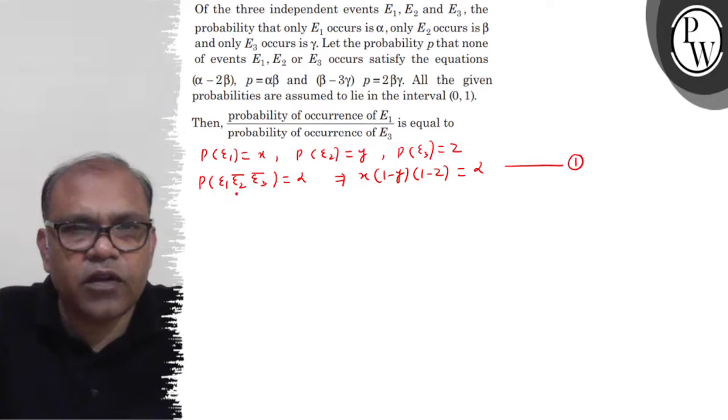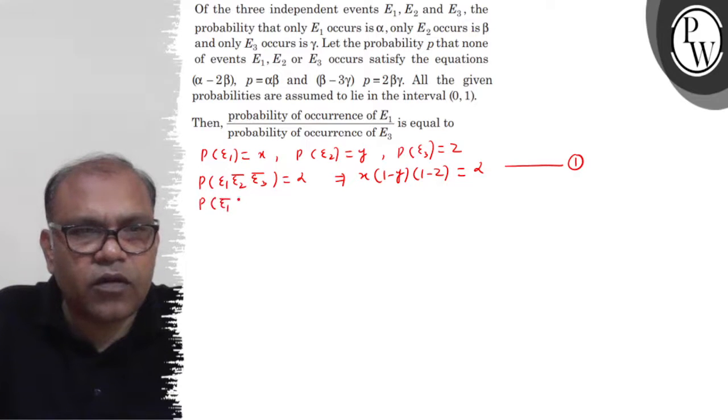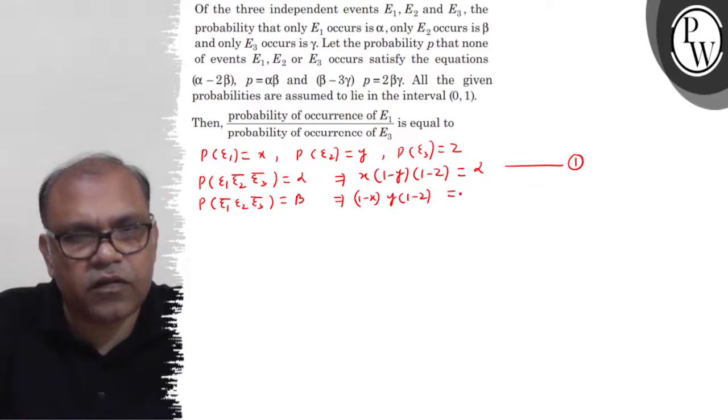Duesra information hai. P(E2, E3 not) equals alpha. This implies (1 minus X) into Y into (1 minus Z) equals alpha. This will be equation second.